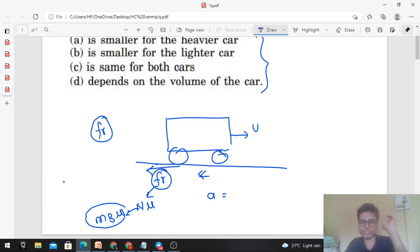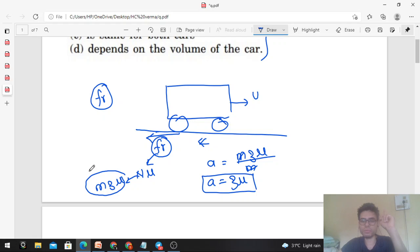This is the force of friction. Now acceleration: force upon mass. Force is mg*μ upon mass, so that is g*μ. You can remember this result also: the maximum retardation for a car is g into μ, where μ is the coefficient of friction between the road and the tires.